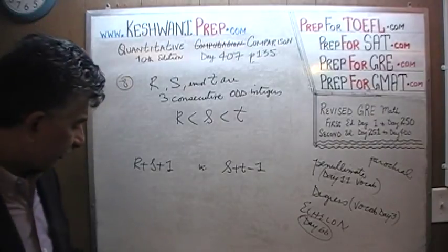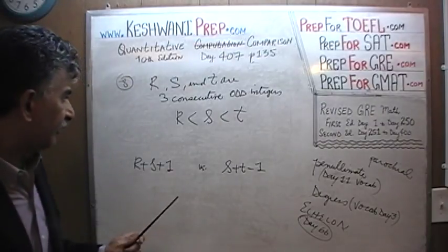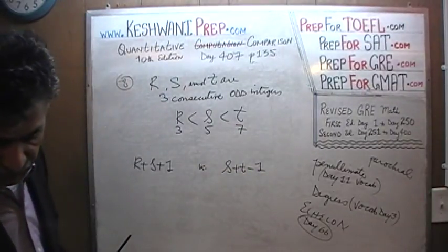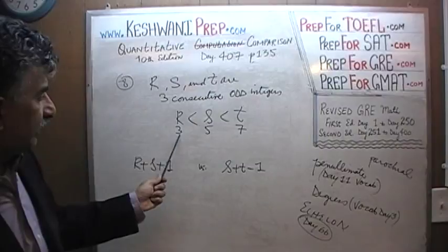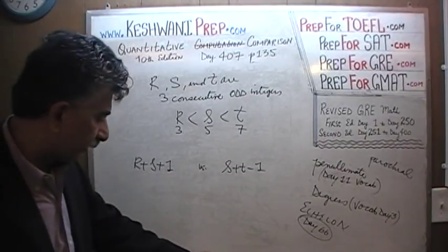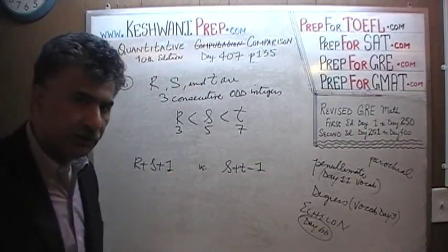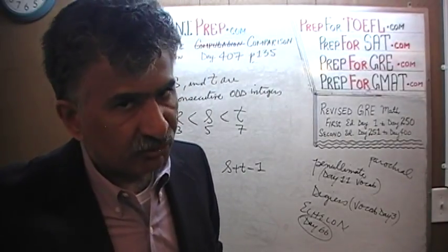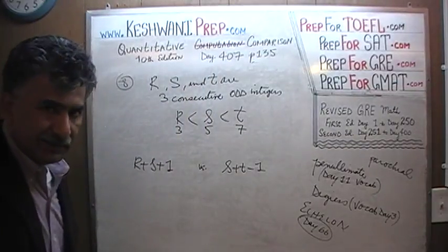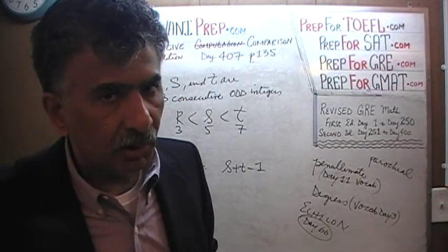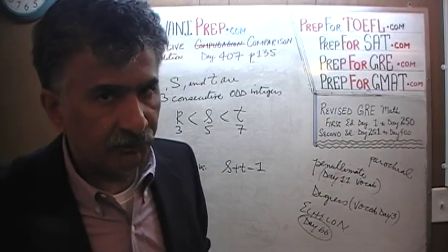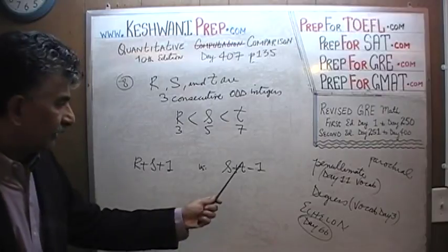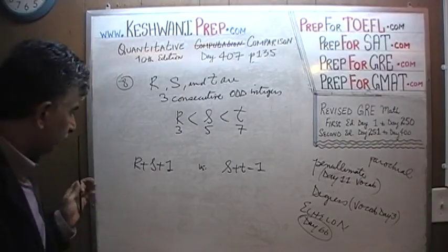But the quickest, the easiest, the simplest way to do is to just plug in numbers. Let's just plug in numbers here. Let's call it 3, 5 and 7. They have to be three consecutive odd numbers. The only thing that you have to keep in mind is that if you want to save a couple of seconds here and there, then don't do extra work. If you find something that appears in both columns, if you find any common elements on the two columns, that element plays no role. We see an S here, we see an S here. Let's subtract S from this column, let's subtract S from that column. It drops out.